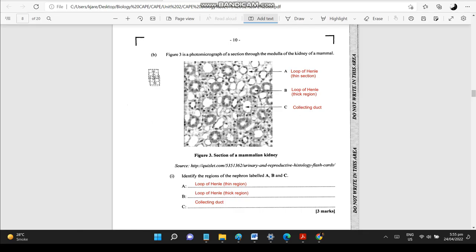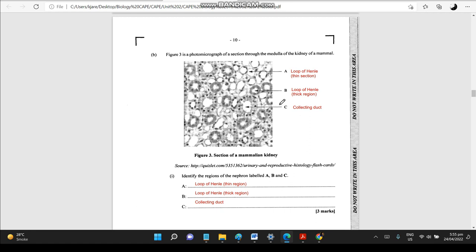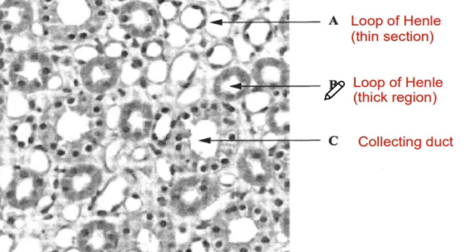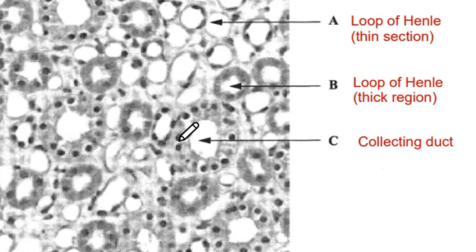Let's look at Question 2B. Figure 3 is a photomicrograph of a section through the medulla of the kidney of a mammal. Three parts are labelled. Parts A and B are both sections of the loop of Henle — you can call them the thin section and the thick section. The difference is the thickness of the cells, and the cells don't have a distinct border between them. Part C would be the collecting duct — the cell borders are quite distinct and the nuclei are present.